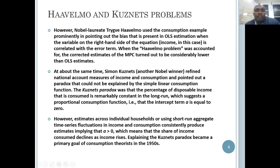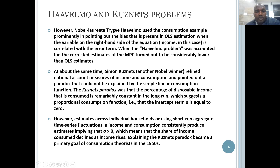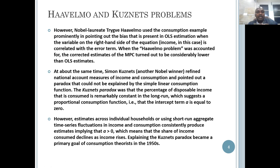But with the passage of time, problems began to arise due to the work of mainly two scholars. There is a Nobel laureate called Haavelmo, who used the consumption example prominently in pointing out the bias present in OLS estimation when the variable on the right-hand side of the equation — which is income — is correlated with the error term. It was discovered that there was no independence between the error term and national income YT.